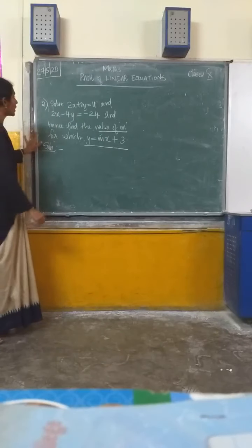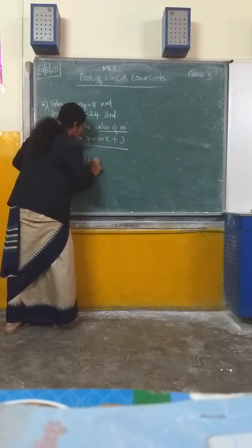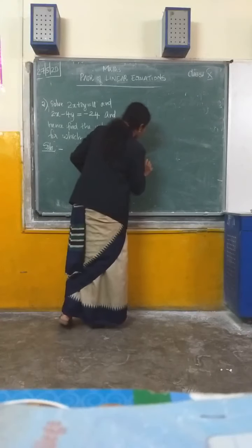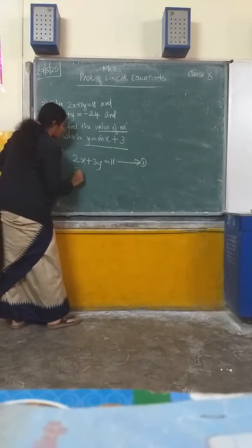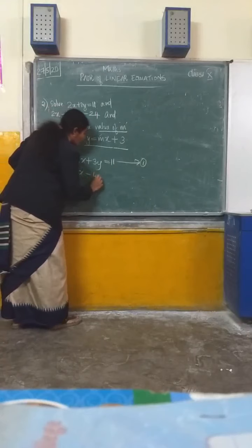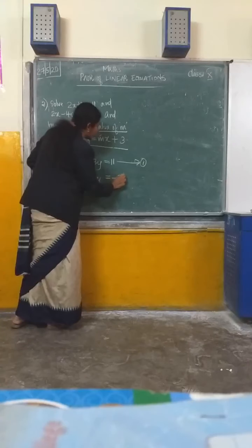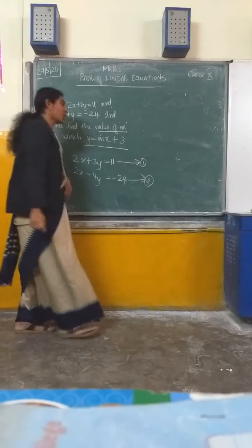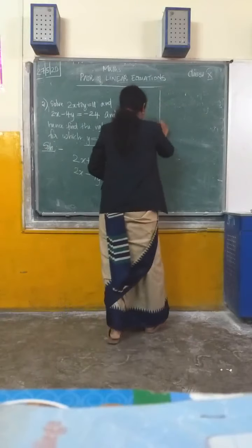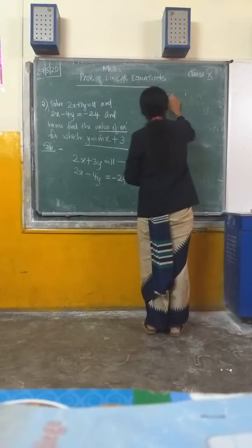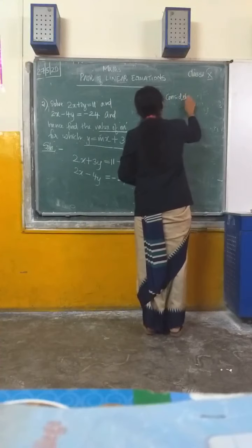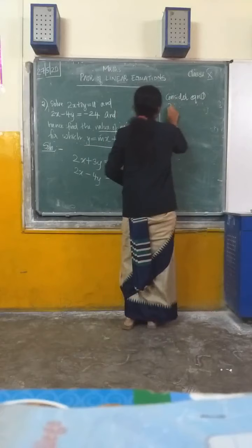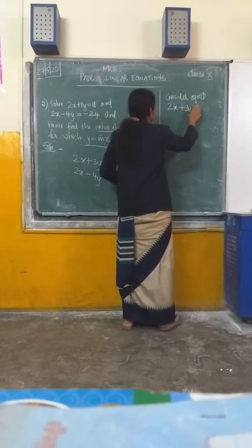So first equation: 2x plus 3y equal to 11 — call this equation number 1. Second equation: 2x minus 4y equal to minus 24 — call this equation number 2. First, what is the step we should do? Consider equation number 1, which is 2x plus 3y equal to 11, and write a variable in terms of the other.